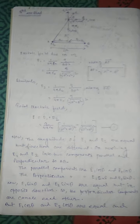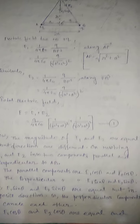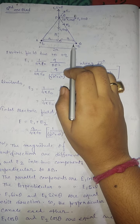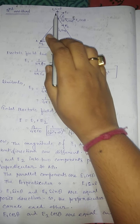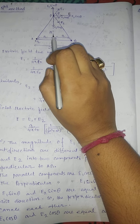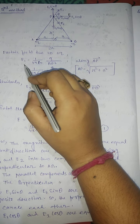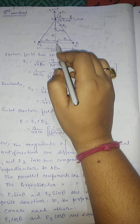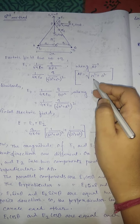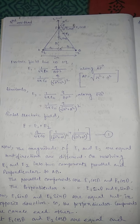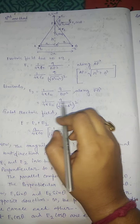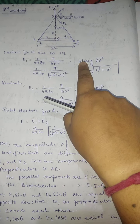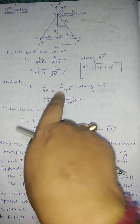The second method is simpler. We consider the dipole AB with separation 2a, and at point P from the midpoint O at a distance r we calculate the field. The electric field due to +q is E1 = (1/4πε₀) × q / AP². Since AP is the hypotenuse and OA = a is the base, AP = √(r² + a²) by the Pythagorean theorem.